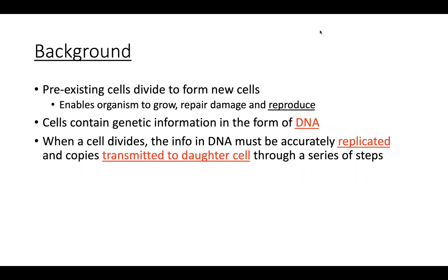Just a little background — we talked about cell theory already, but we know that the cell is the most basic unit of life. One of the postulates of the cell theory tells us that new cells arise from pre-existing cells. These pre-existing cells will go through cellular division to form new cells, and the creation of new cells is necessary for an organism to continue to grow, repair tissue damage, and reproduce.